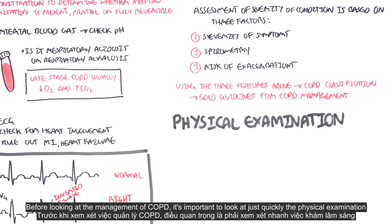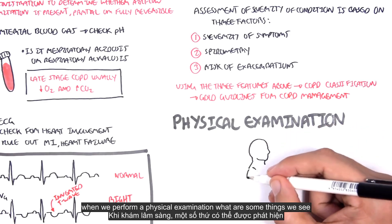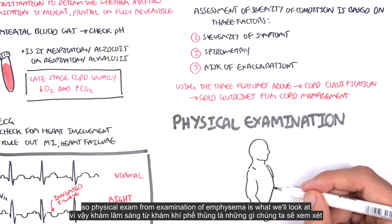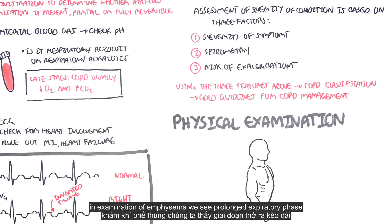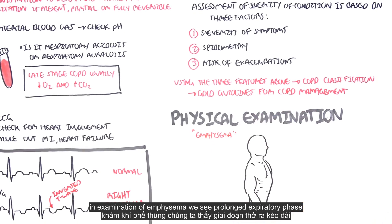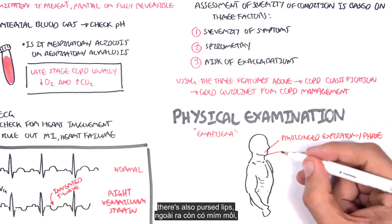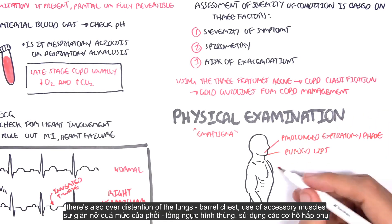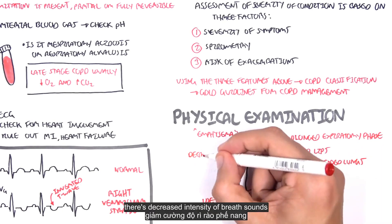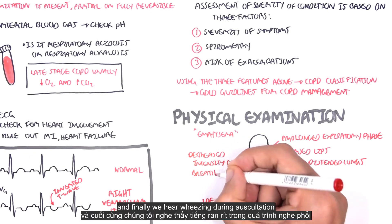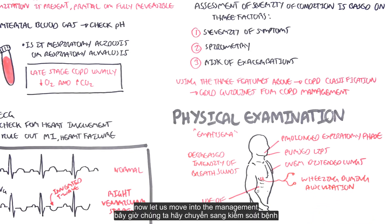Before looking at management, it's important to quickly look at the physical examination. In examination of emphysema we see: prolonged expiratory phase as the patient is trying to push air out of the lungs, pursed lips, over-distension of the lungs, barrel chest, use of accessory muscles, decreased intensity of breath sounds, and wheezing during auscultation.